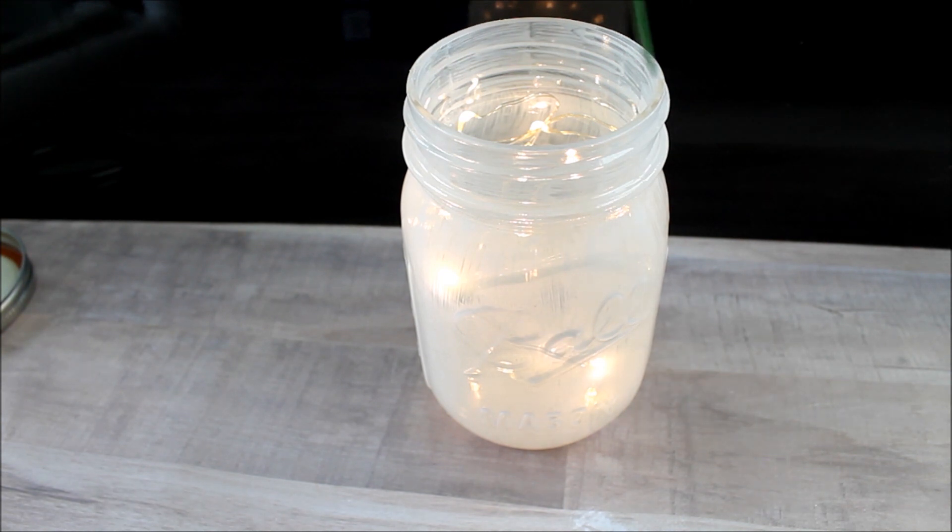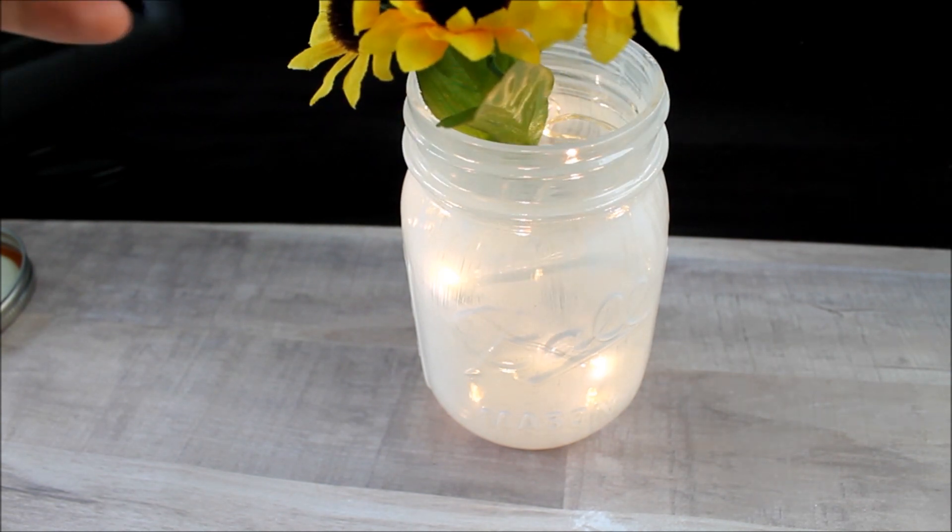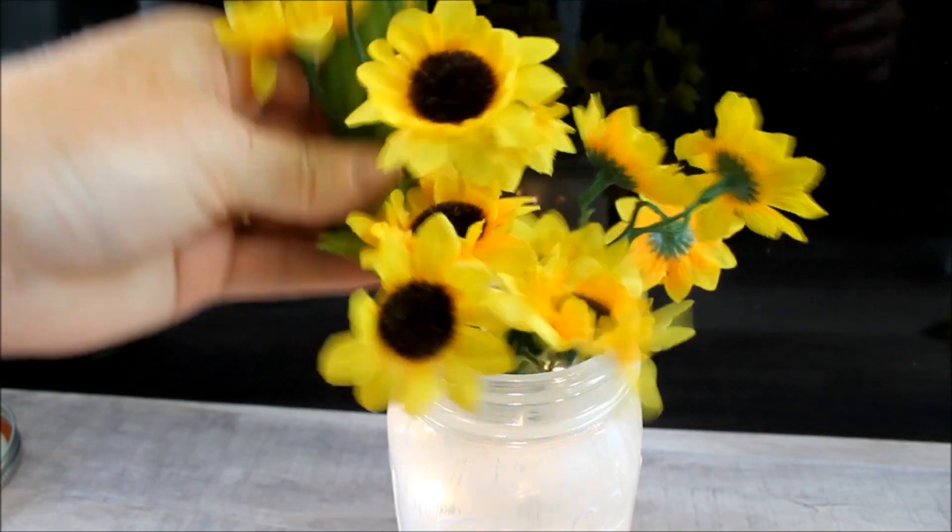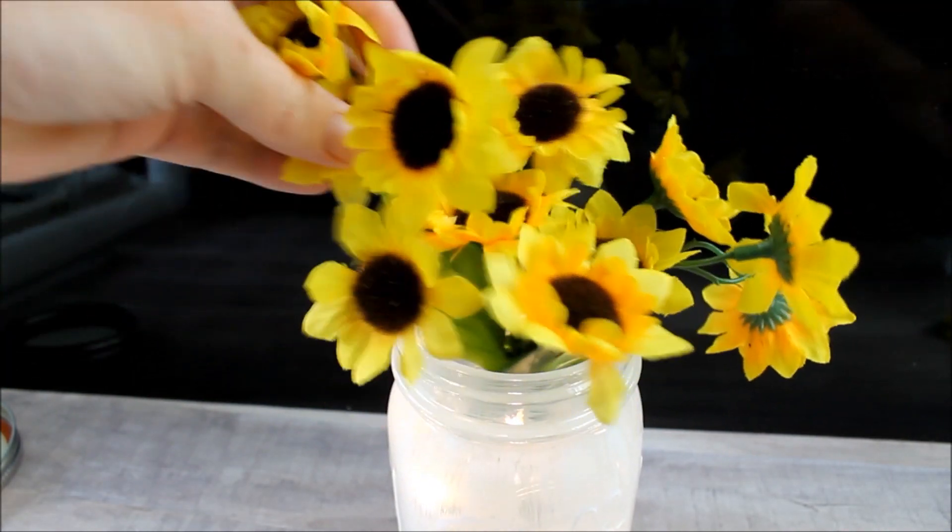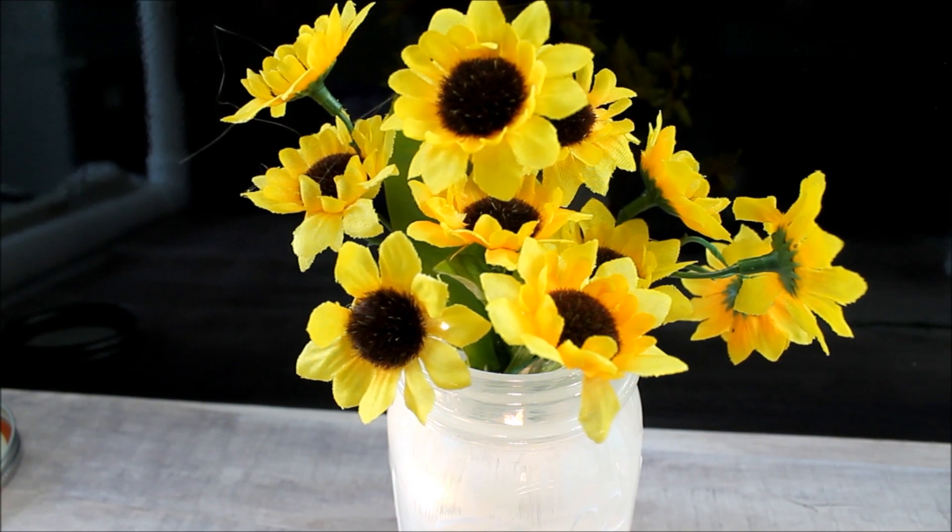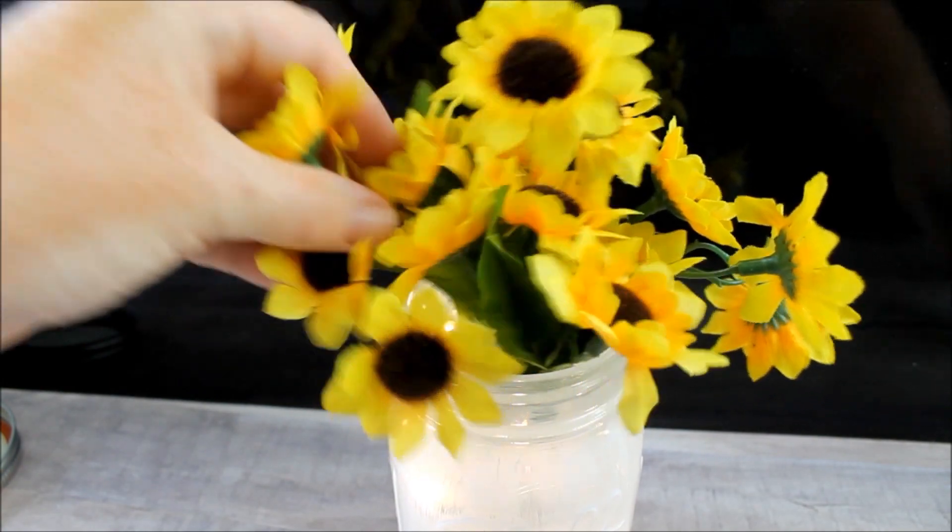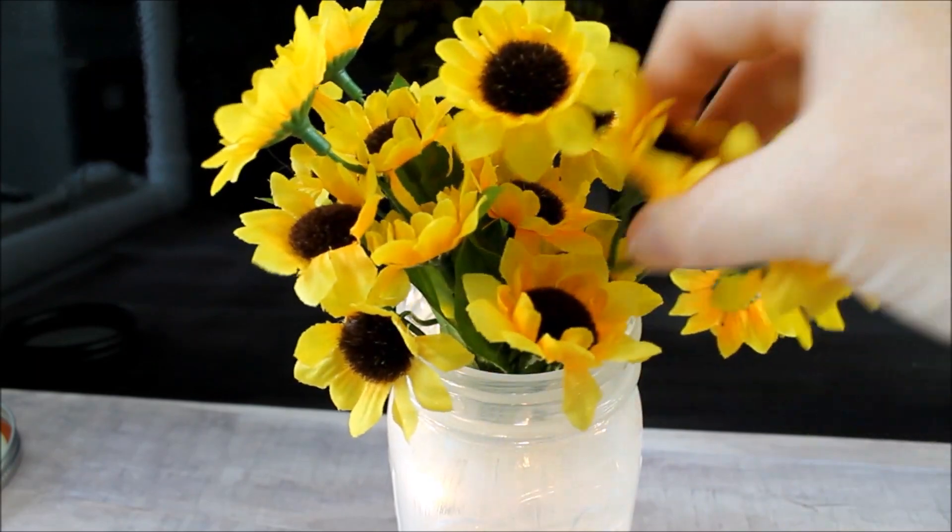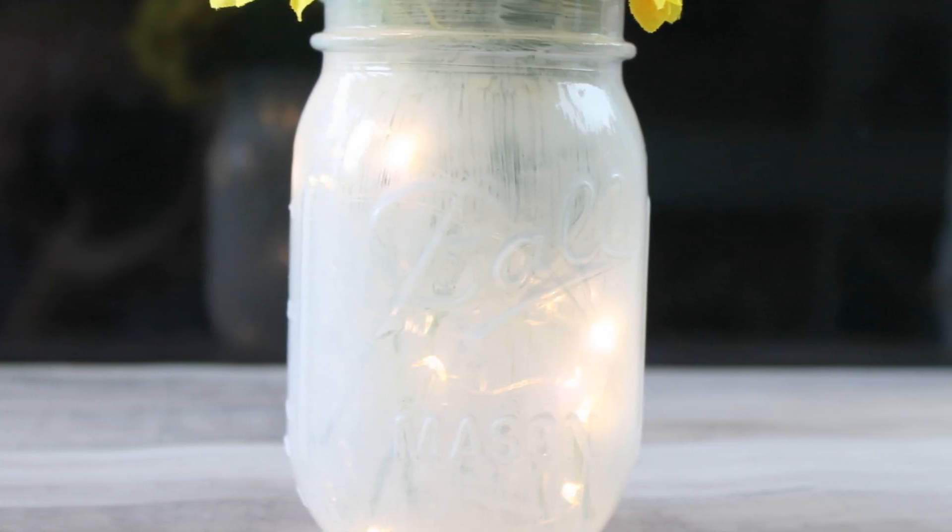You can see that you can see the lights through the paint, and then you just add your flowers. Here I'm adding some flowers for a slightly fall theme, but this project works for any season. Add in the flowers of your choice, as many as you would like, and then your fairy lantern in a mason jar is complete.